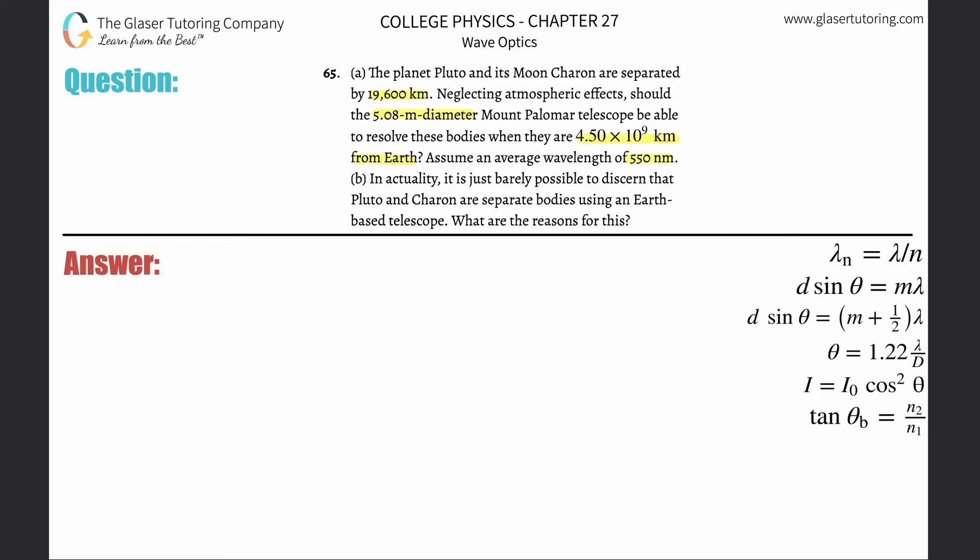So what we're going to do is find the minimum resolution angle theta. That's what we're going to do for this telescope first. That's just a function of the wavelength divided by the diameter of the aperture inside the telescope. So theta here is going to be 1.22 multiplied by lambda, which is 550, the wavelength that is.